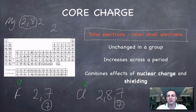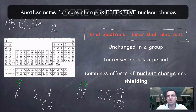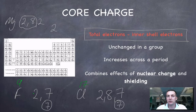To cut a long story short: core charge doesn't change within a group, it increases as you move along a period, and it effectively measures how much charge those outer shell electrons experience from the nucleus, bearing in mind that the nucleus might be a different size and that inner shell electrons will repel outer shell electrons.